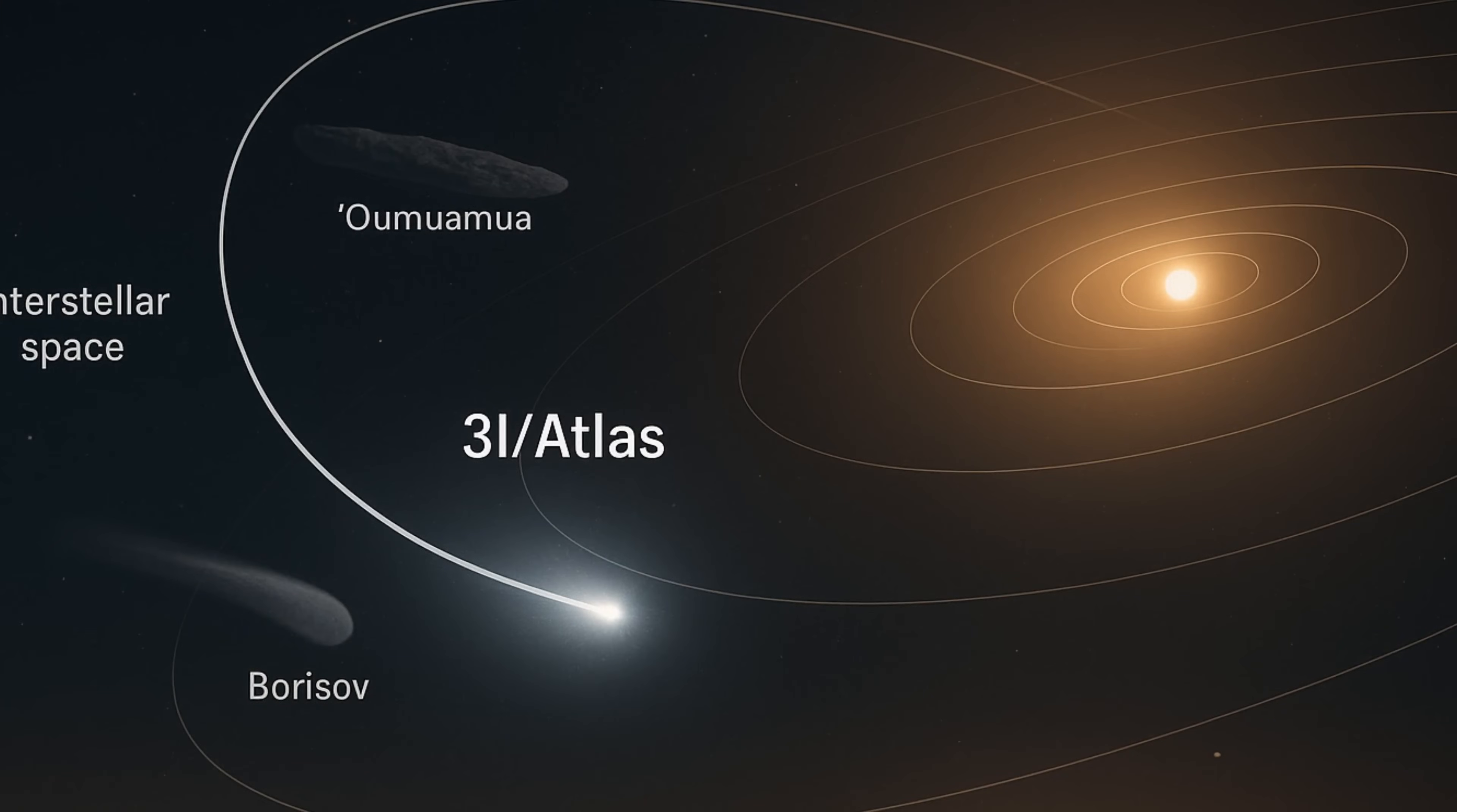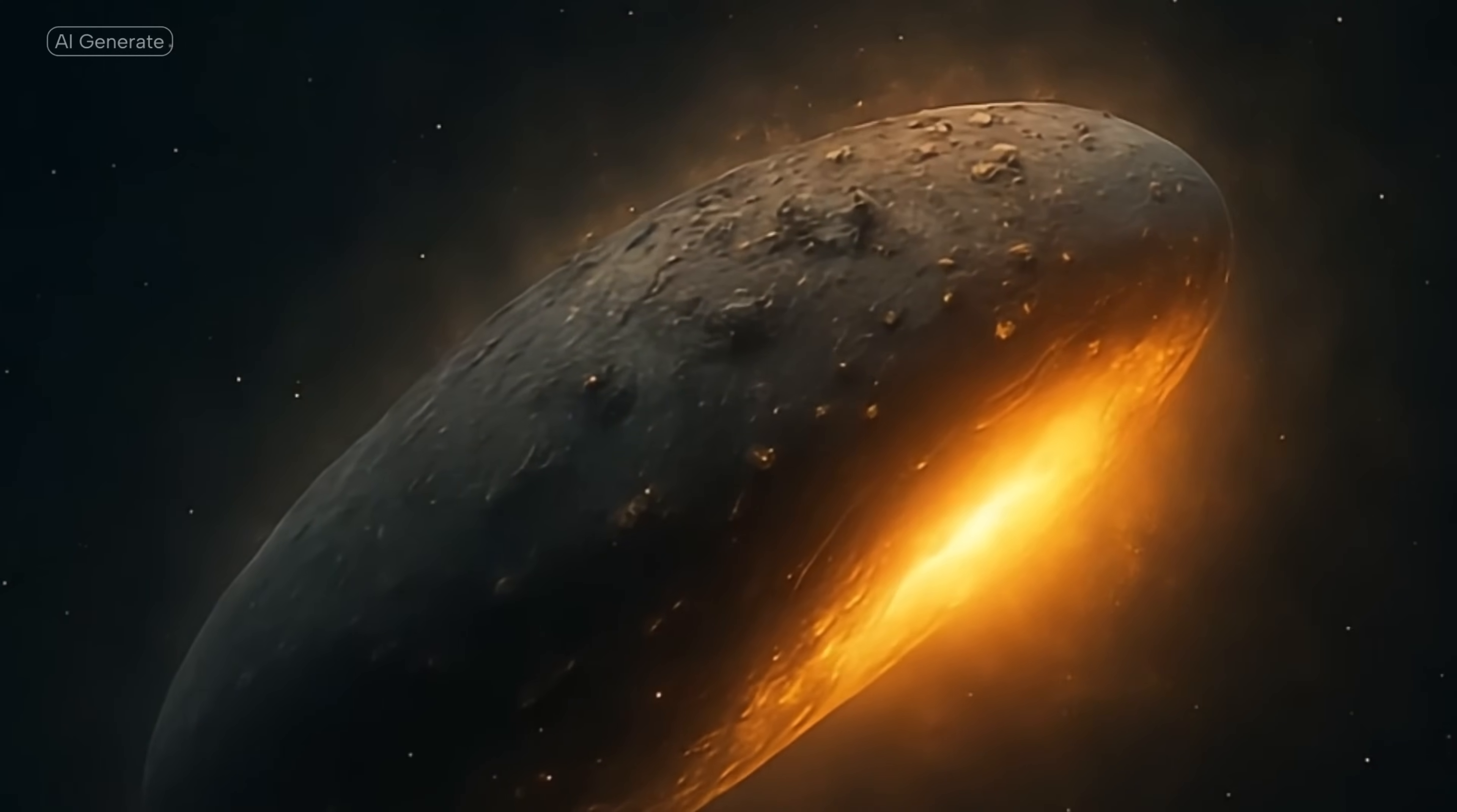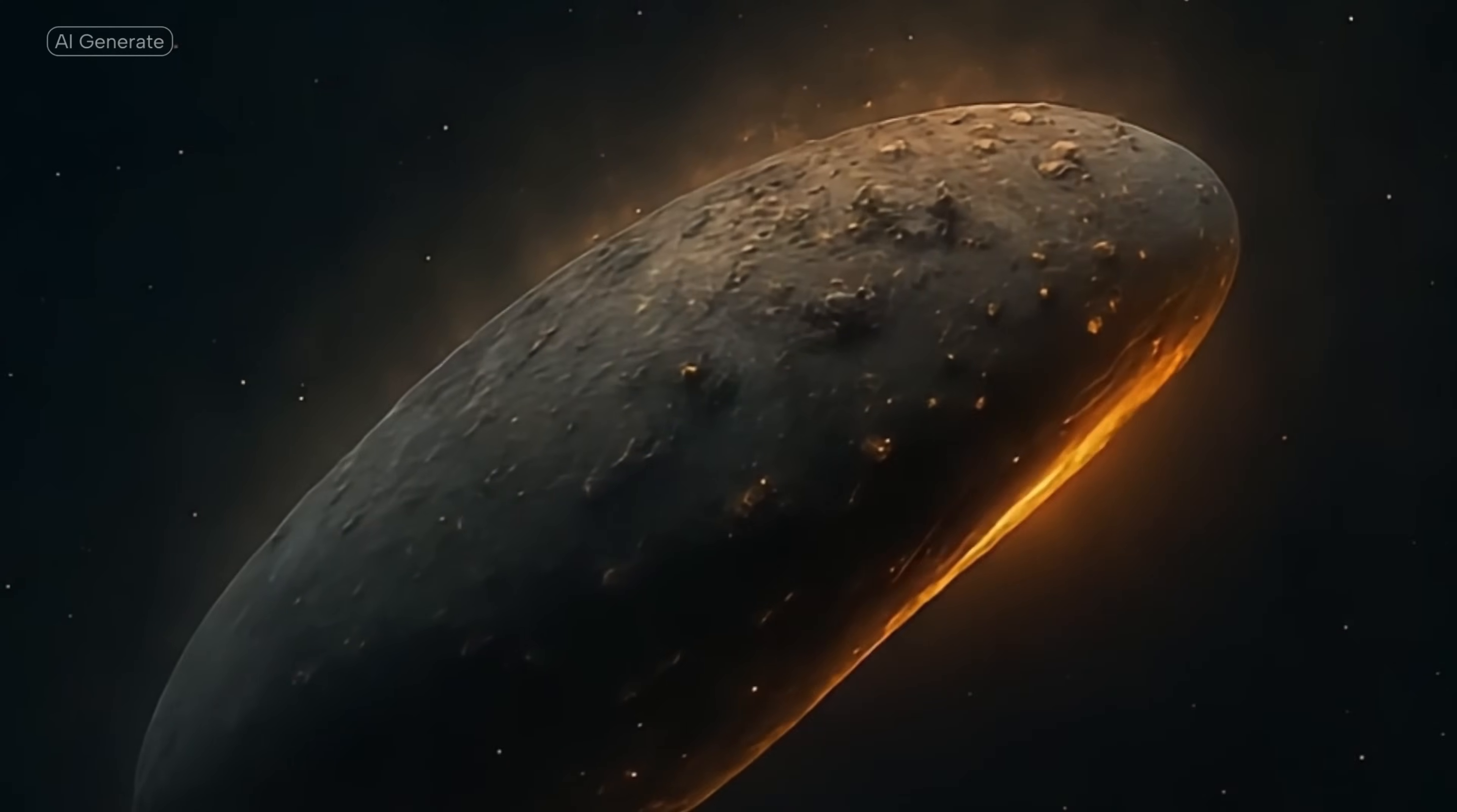Back in the summer of 2025, the asteroid terrestrial impact last alert system, that's Atlas for short, picked up something new. The 3i in its name tells you the most important part of its story. It's only the third interstellar object we've ever found. And that's really what makes this thing so special. Unlike Halley's Comet or all the asteroids in our own belt, which are all part of the sun's family, this object is just passing through. It's a true alien in the most literal sense of the word.